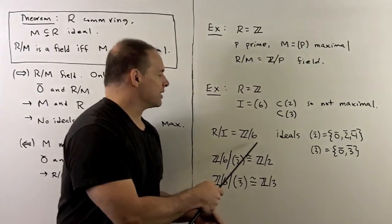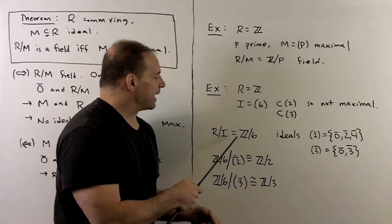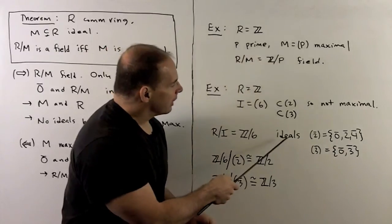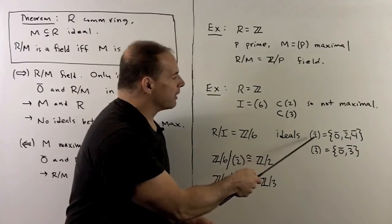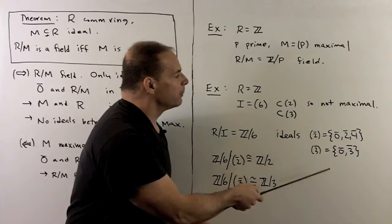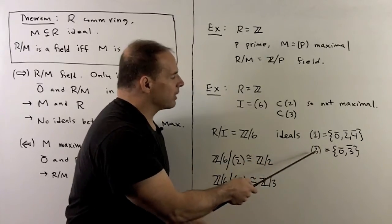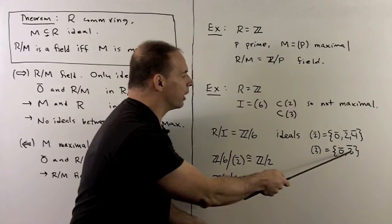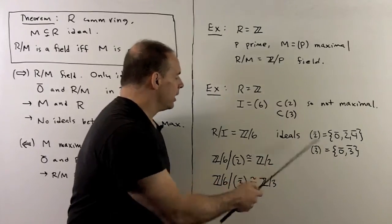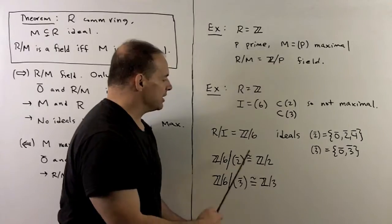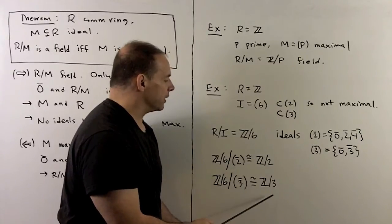We can push this one step further. In ℤ mod 6, the ideals are: {0}, ℤ mod 6, the ideal generated by the class of 2 (which is {0, 2, 4}), and the ideal generated by the class of 3 (which is {0, 3}). These last two are maximal ideals. Taking the quotients gives ℤ mod 2 and ℤ mod 3, and these are fields.